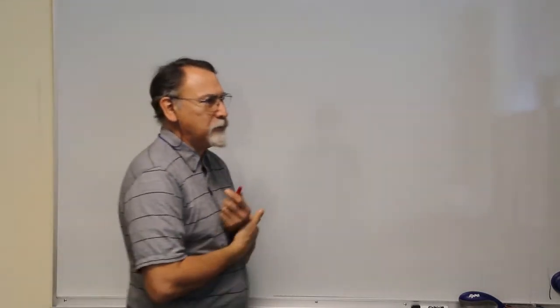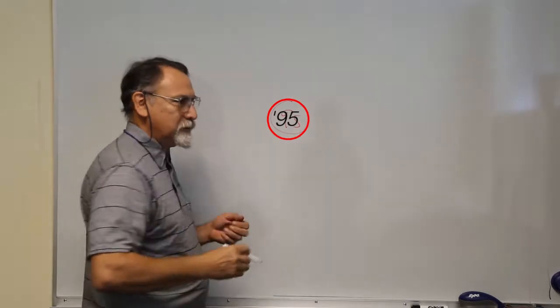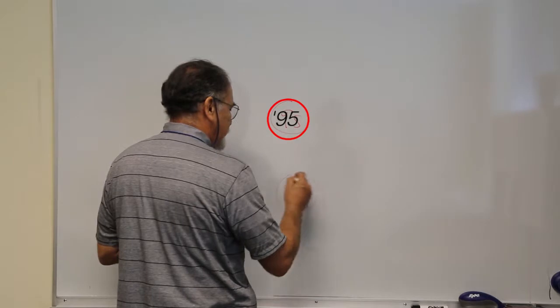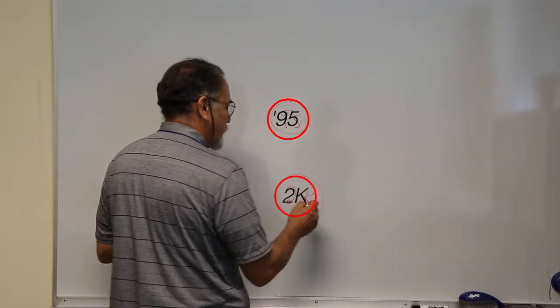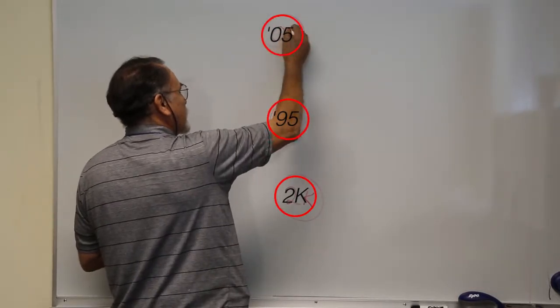I'd like to introduce four examples I will rely on throughout this course. The first example is that of a doctor's office. In 1995, a doctor opened an office in the middle of town. Then in the year 2000, they opened one on the south part of town. And then as time went on, they opened one on the north side of town.